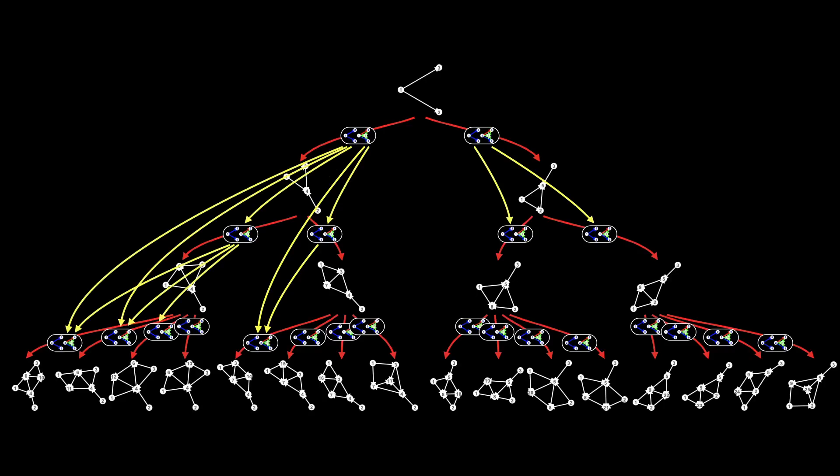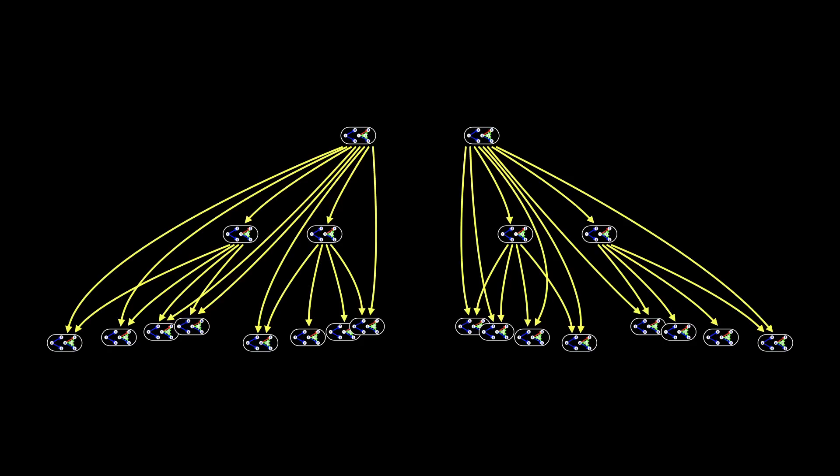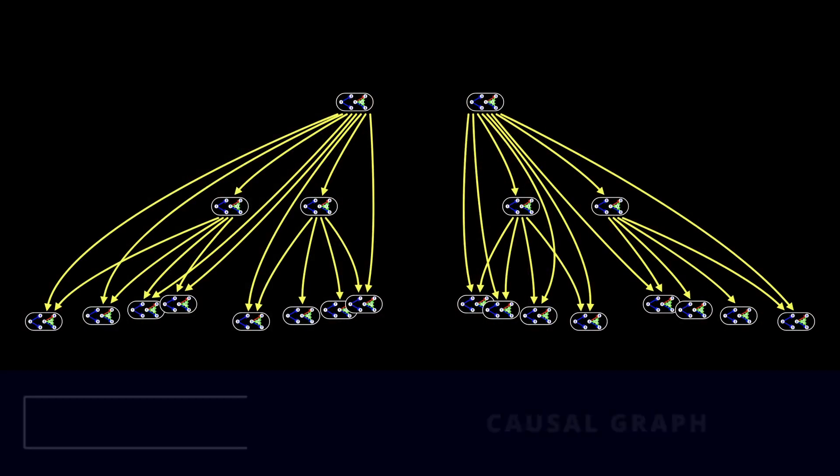I can add yellow arrows for all of the events in the multiway graph. And I can complete the shift in perspective by removing the hypergraphs connected by the red arrows, leaving only the events connected by the yellow arrows. Now we know which events have to happen before which other events can happen. These yellow arrows are called causal edges. They represent causal relationships between events. The graph we've just created is called the causal graph.